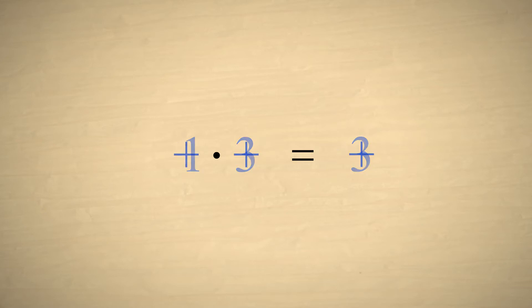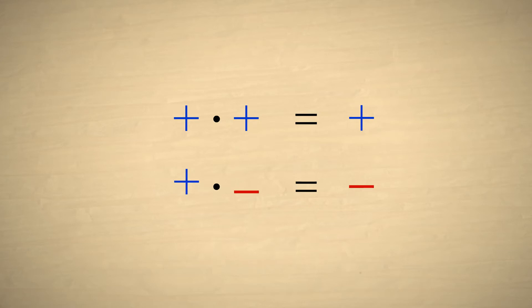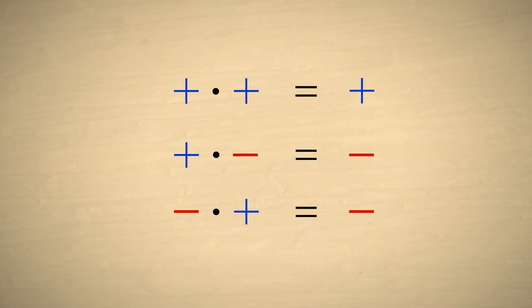Therefore, multiplying a positive number times a positive number must produce a positive result, and multiplying a positive number times a negative number must produce a negative result. Because of the commutative property of multiplication, we should be able to swap the operands and get the same result. So if either operand is negative, we must still get a negative result.